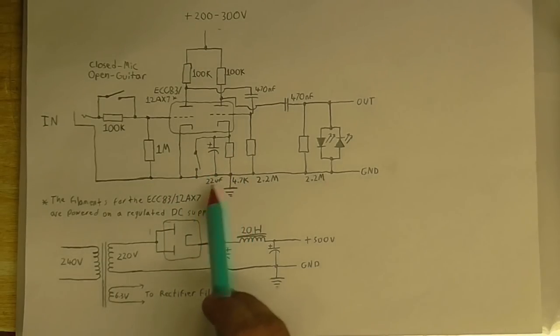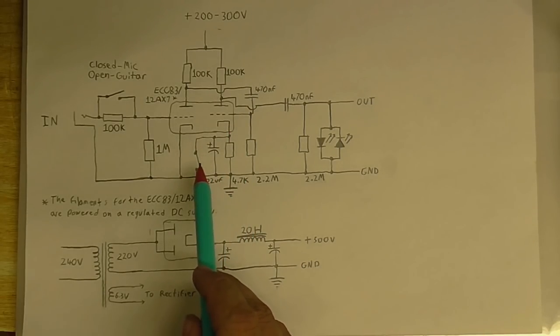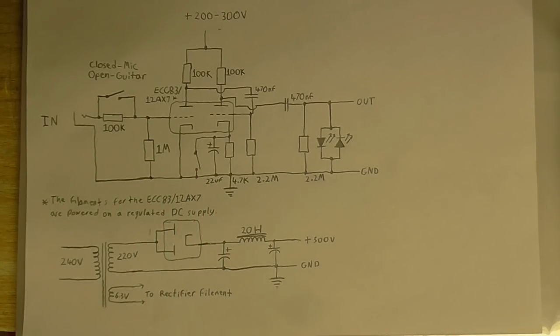And this part here, I've decided to make a little thing where I can short this cathode to ground if I want to. So that's what that switch there does. So with that switch open, it will have a little bit less gain in the low end, but the high end will be relatively unaffected.